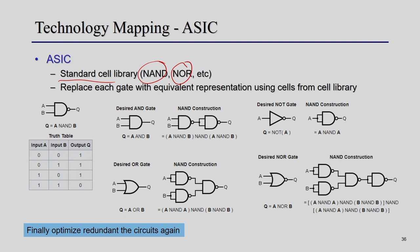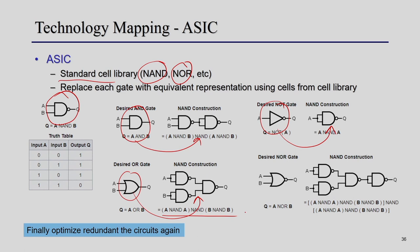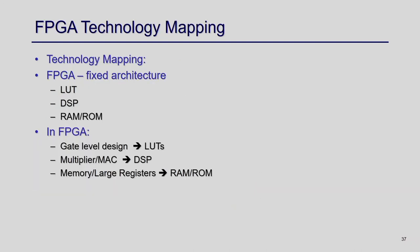For example, if your target library has only NAND gates, you can represent an AND gate using NANDs, a NAND gate using NANDs, an OR gate using NAND gates, and a NOR gate using only NAND gates. This is how the logic circuit is rewritten using only the technology cell library. After this rewriting, redundancy is reintroduced and multi-level optimization must be applied again to minimize the circuit. For FPGA mapping, the fixed architecture has specific resources like LUTs.